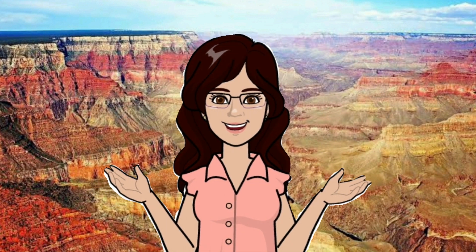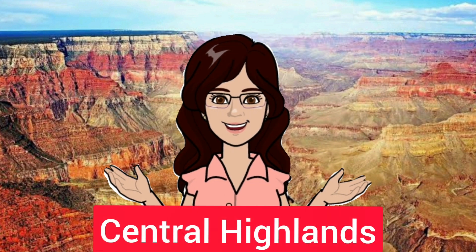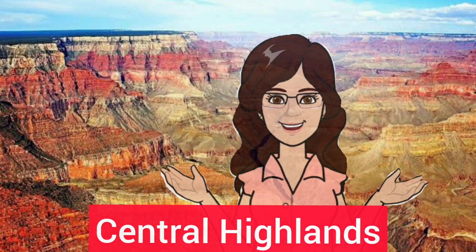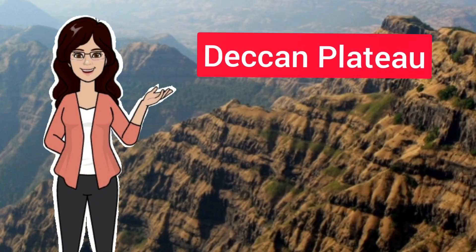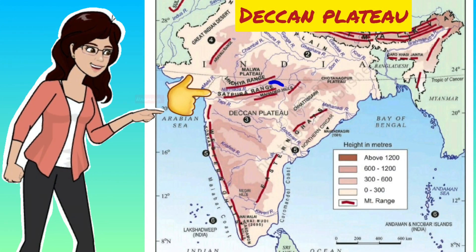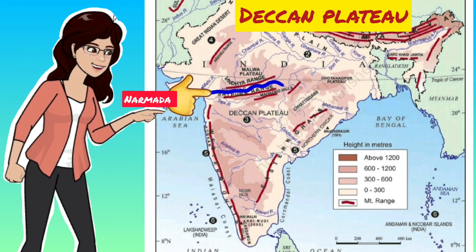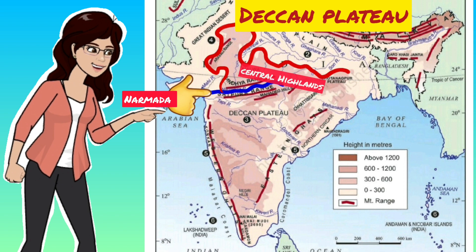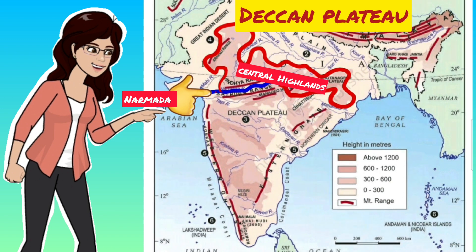In my previous video you studied about the Central Highlands. Now let us get familiar with the Deccan Plateau. This is the name given to the southern part of the Peninsular Plateau. The river Narmada separates the Deccan Plateau from the Central Highlands. North of the river Narmada we have the Central Highlands, whereas south of this river you can find the Deccan Plateau.